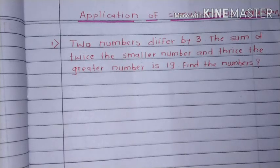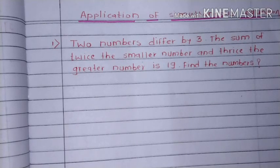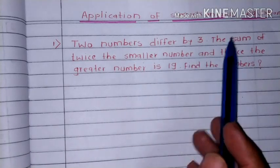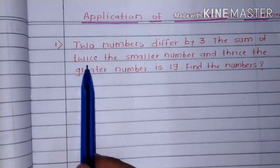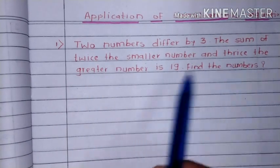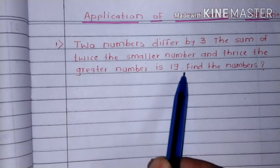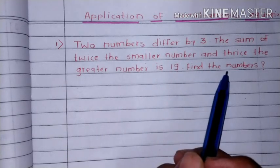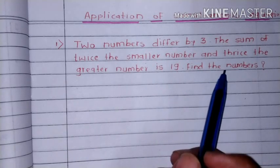First example: two numbers differ by three. The sum of twice the smaller number and thrice the greater number is 19. Find the numbers.